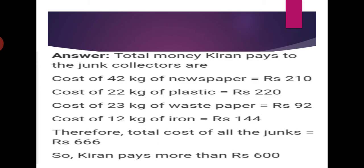Total money Kiran pays to the junk collectors: cost of 42 kg of newspaper is rupees 210, cost of 22 kg of plastic is rupees 220, cost of 23 kg of waste paper is rupees 92, and cost of 12 kg of iron is rupees 144. These 4 answers you have already done. Write the statements in this way and at last add all 4 amounts. Therefore total cost of all the junks equals 210 plus 220 plus 92 plus 144.